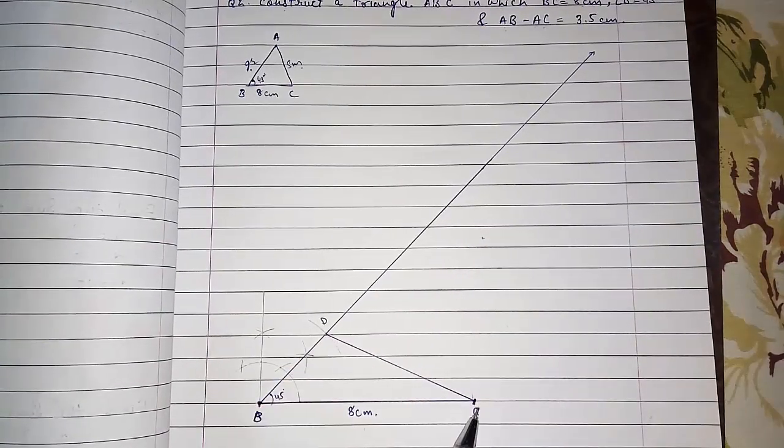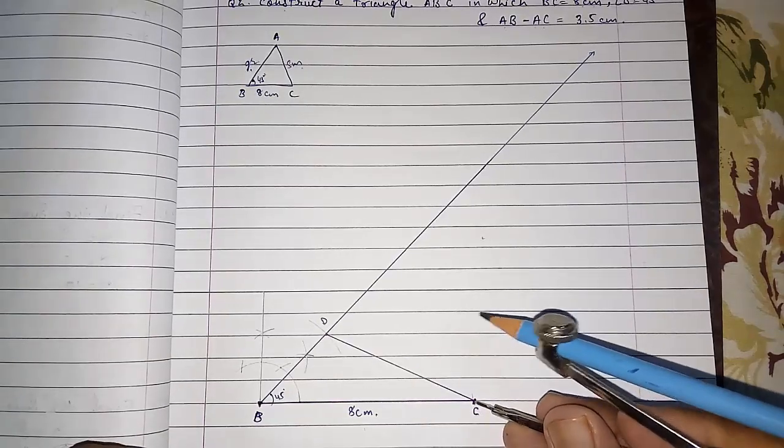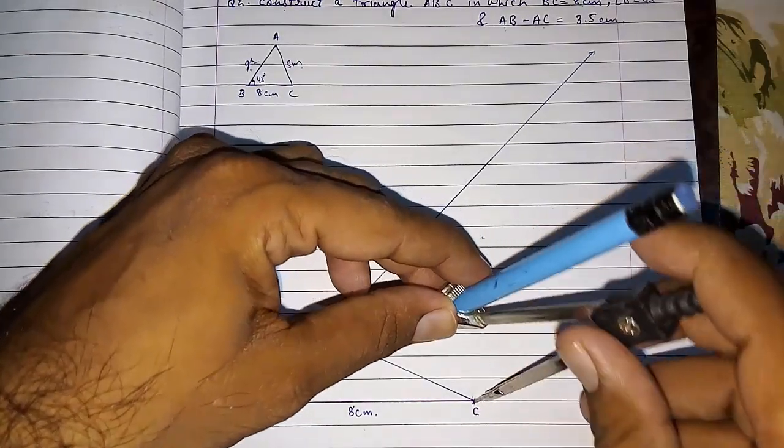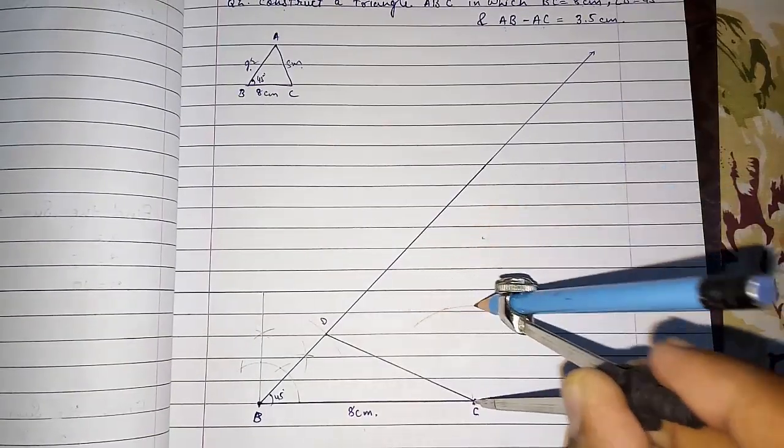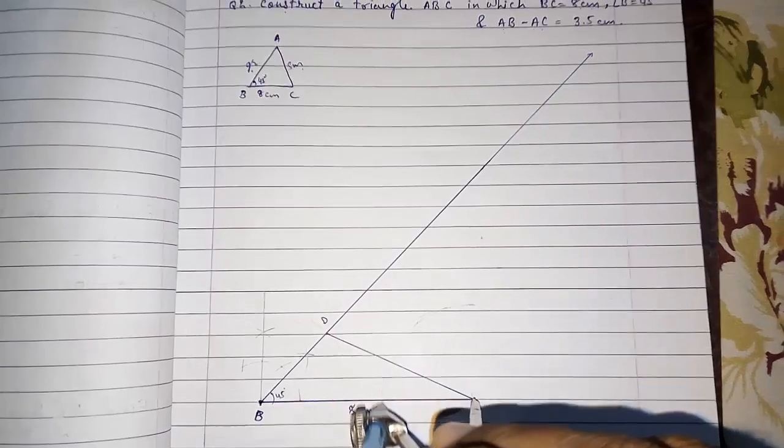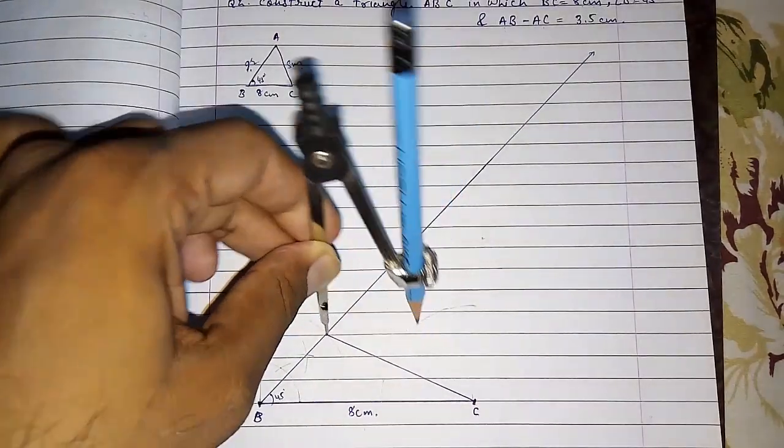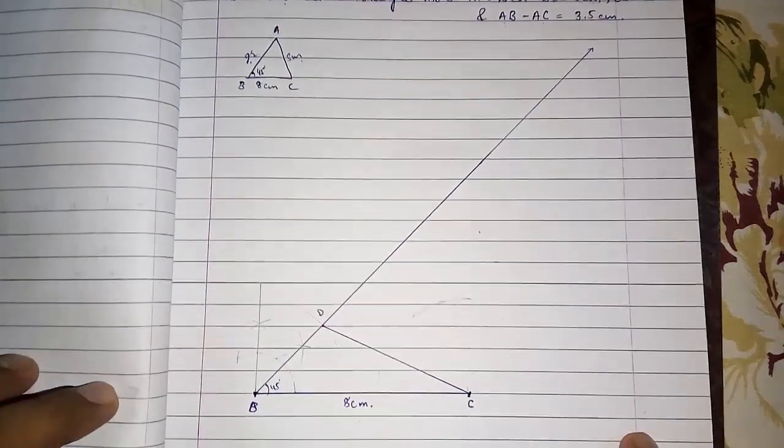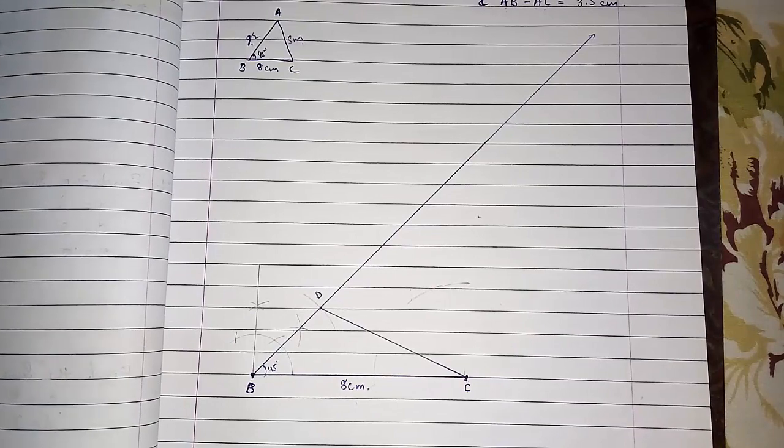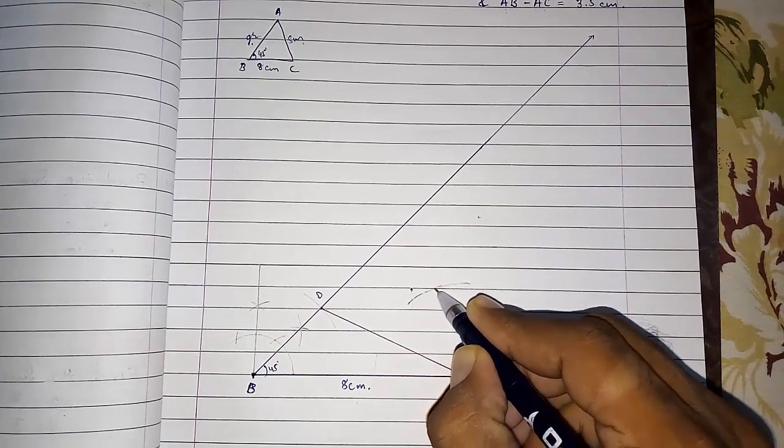Now you have to draw the perpendicular bisector of C and D. The radius should be more than half of your side, and you have to draw it on both sides, on the upper side and on the lower side also. You can see I had made it on both sides.